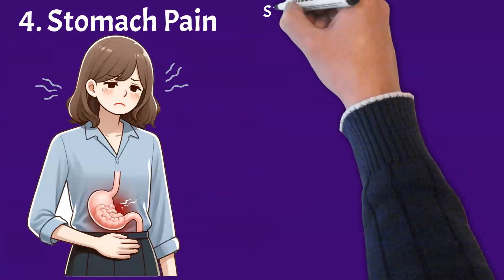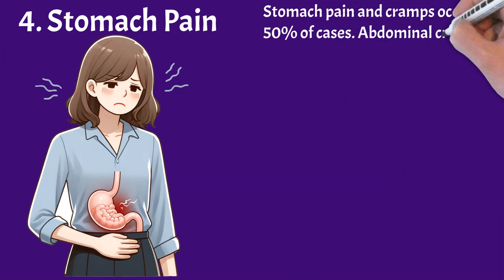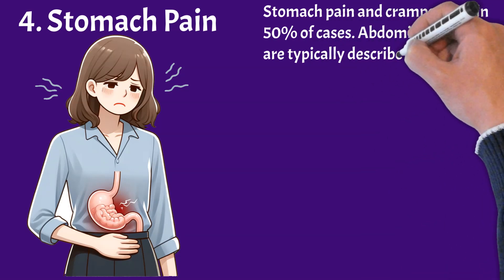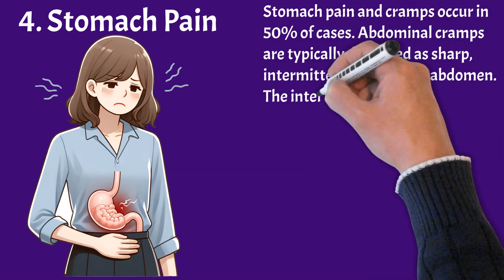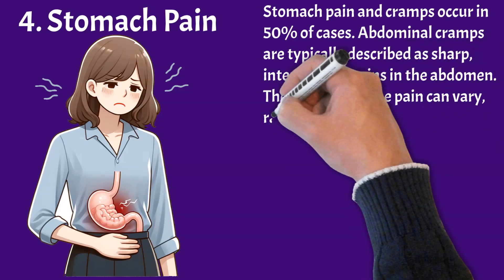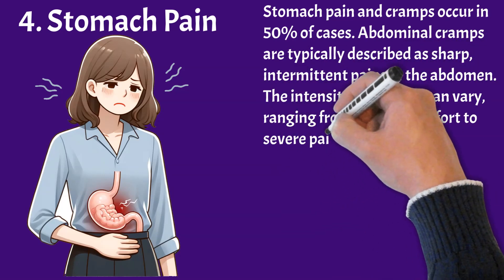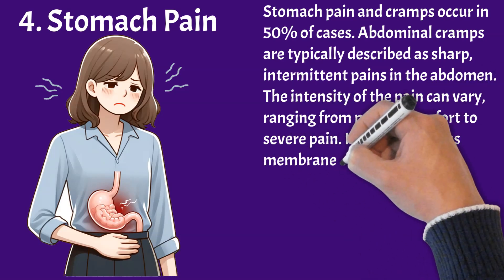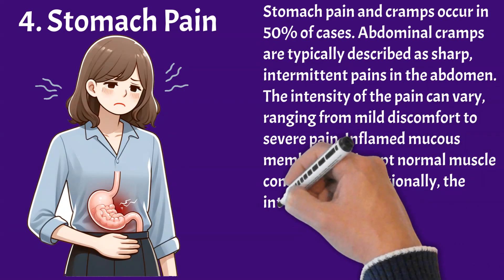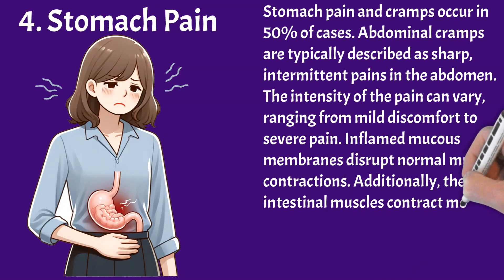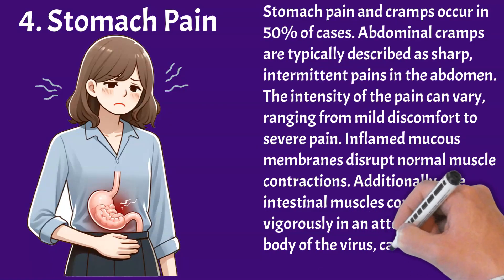Stomach pain and cramps occur in 50% of cases. Abdominal cramps are typically described as sharp, intermittent pains in the abdomen. The intensity of the pain can vary, ranging from mild discomfort to severe pain. Inflamed mucous membranes disrupt normal muscle contractions. Additionally, the intestinal muscles contract more vigorously in an attempt to rid the body of the virus, causing cramps and pain.